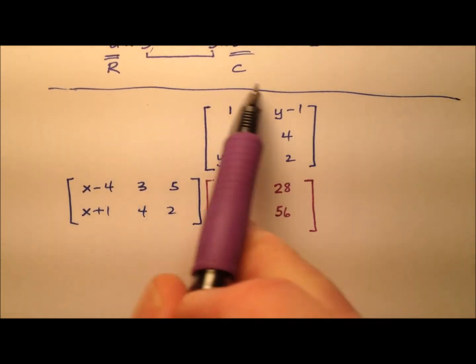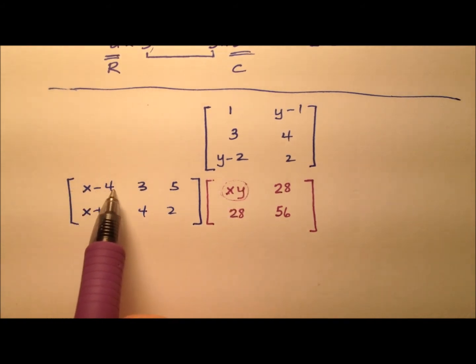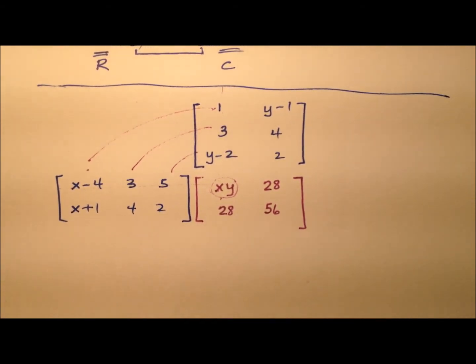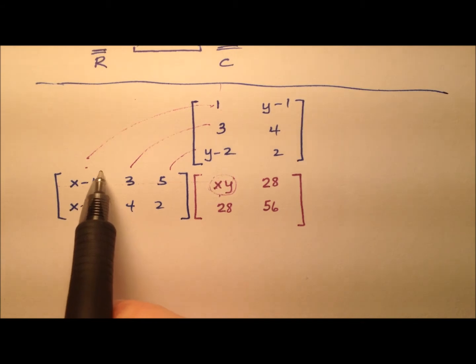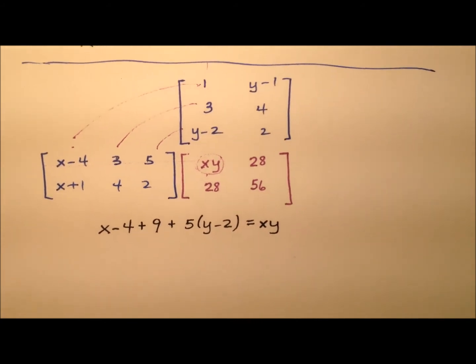Here's our matrix multiplication algorithm, our process here. So this xy, so this is the first entry, and this entry is found by coming across this row and down this column, multiplying consecutive terms, and then adding all those products. So we can then go ahead and write some equations. So it's going to be x-4, which is the first entry here, times 1, so that's just x-4, and then 3 times 3 is 9, and then 5 times (y-2), and of course we're adding all of these consecutive products, and that's going to equal xy.